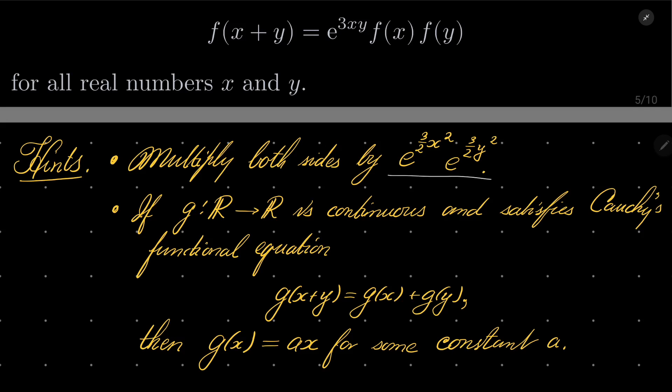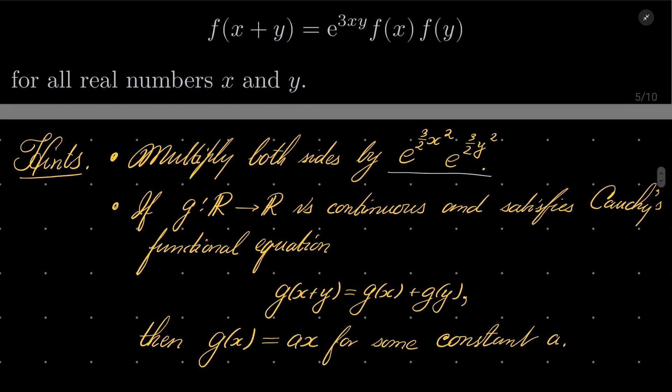g(x) equals ax for some constant a. So along the way you should make some kind of substitution to reduce our problem to Cauchy's functional equation. We'll give this problem a try and I will see you in just a minute.